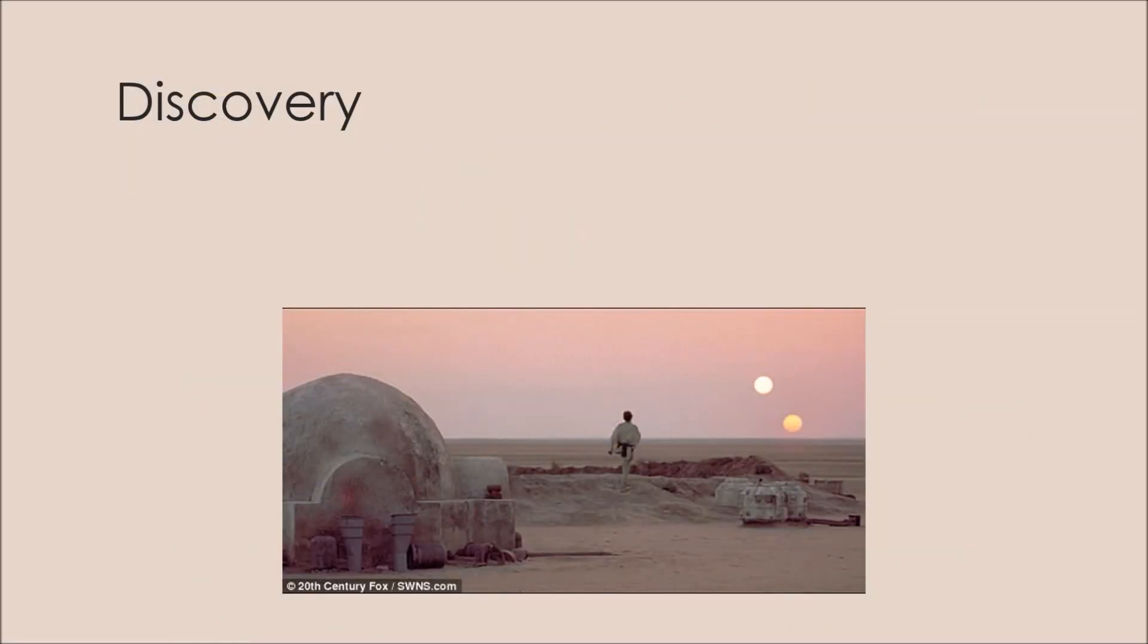Kepler-16b, the exoplanet known for having this mystical double sunset, was discovered in 2011 by the NASA Kepler mission, which has the objective of exploring the structure and diversity of planetary systems. The exoplanet stands about 200 light years away from Earth.